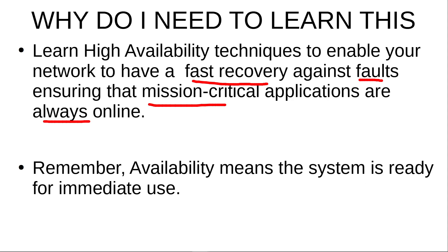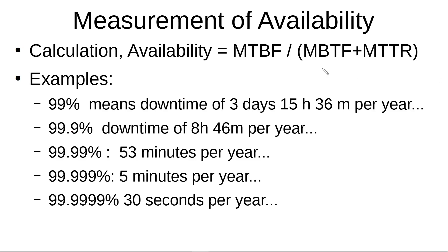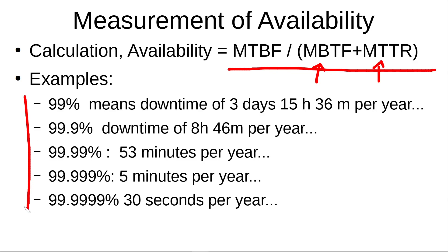There is a measurement of availability through a formula. MTBF means Mean Time Between Failures and MTTR means Mean Time to Recovery. For example, if you achieve four nines of availability, that means your network was down only 30 seconds in one year.